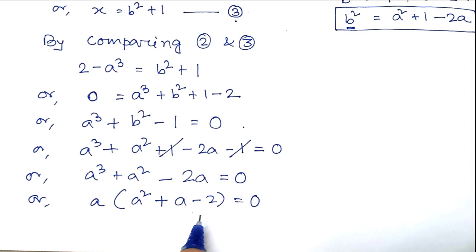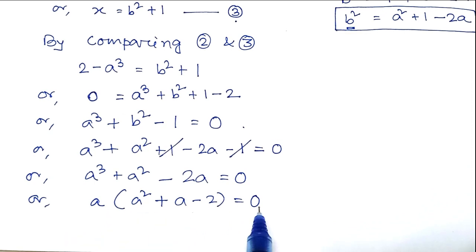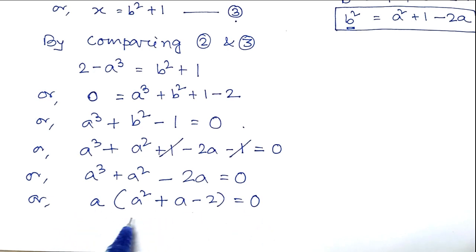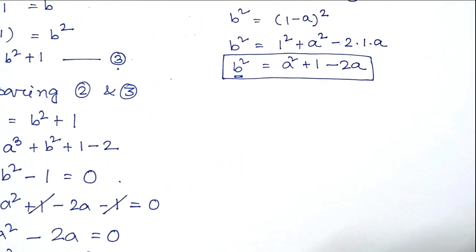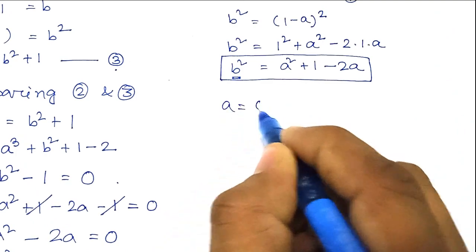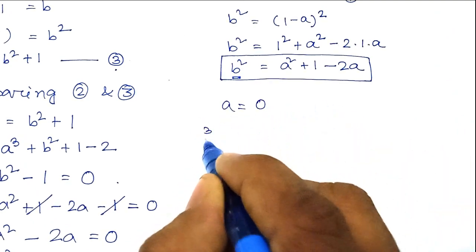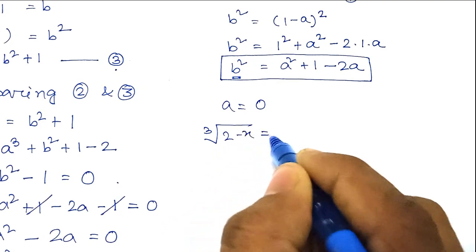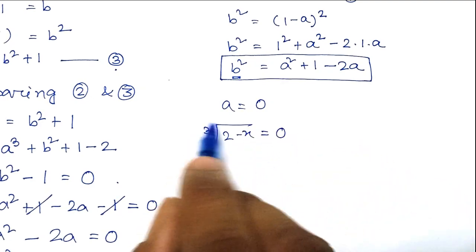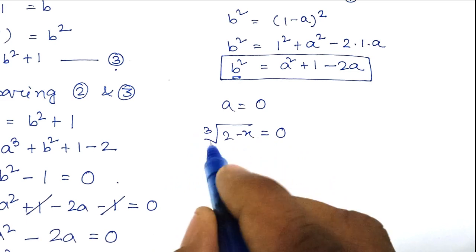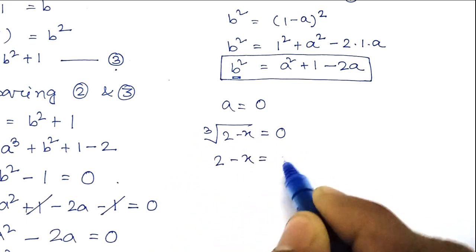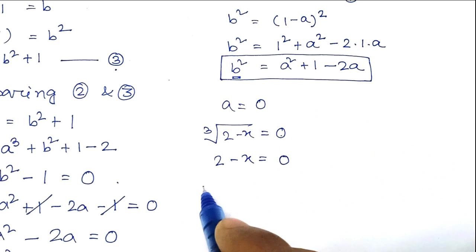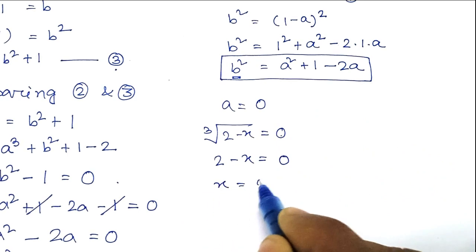Taking a common, we get a times (a squared plus a minus 2) equals 0. Since the product of two real numbers is 0, either a equals 0 or the bracket expression equals 0. If a equals 0, then cube root of (2 minus x) equals 0. Cubing both sides gives 2 minus x equals 0, so x equals 2. This is our first answer.